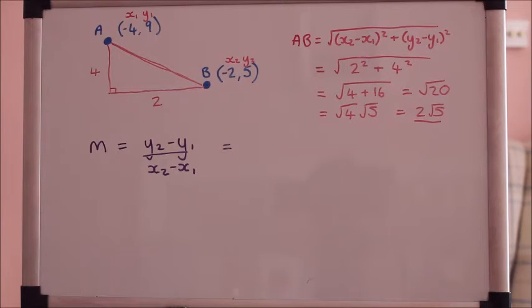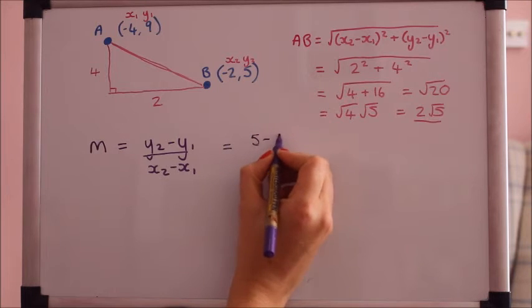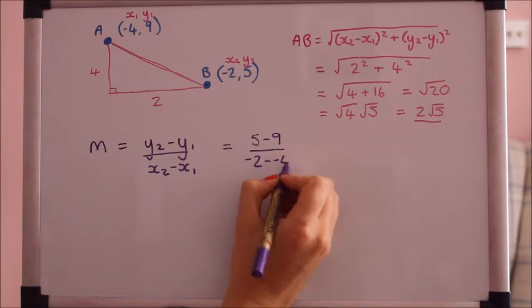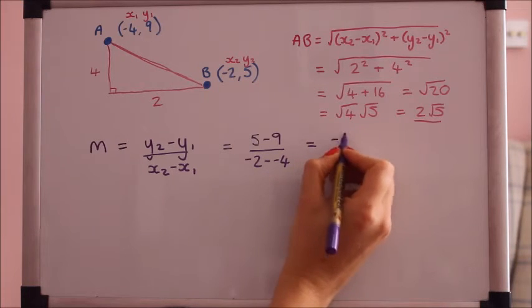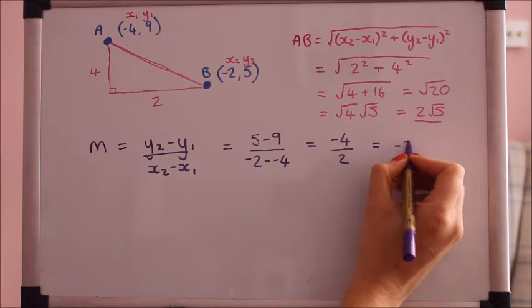I'll directly substitute in the numbers just so you can see how that takes care of that negative value. So y2 take away y1 that will be 5 take away 9 over minus 2 take away minus 4 which is minus 4 over 2 which is minus 2.